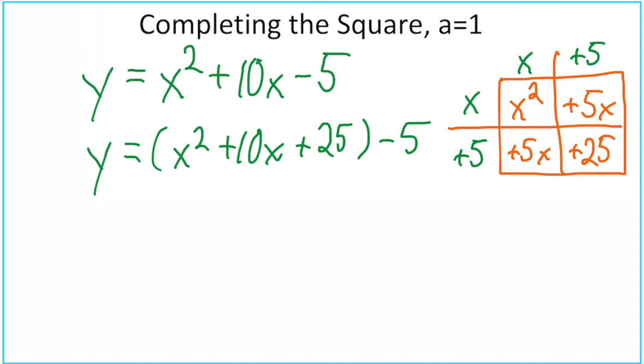Now technically, in this video, our a value is 1. So technically, that's 1 times 25. That's positive 25. So on the outside, we're going to put minus 25. And you can see that I did not do a good job of managing my space here. On the next slide, I'll do better.